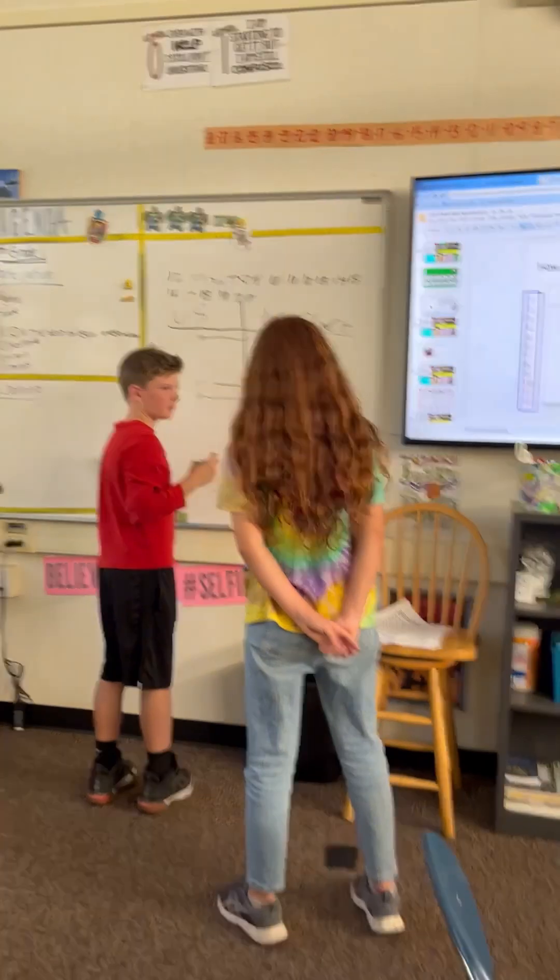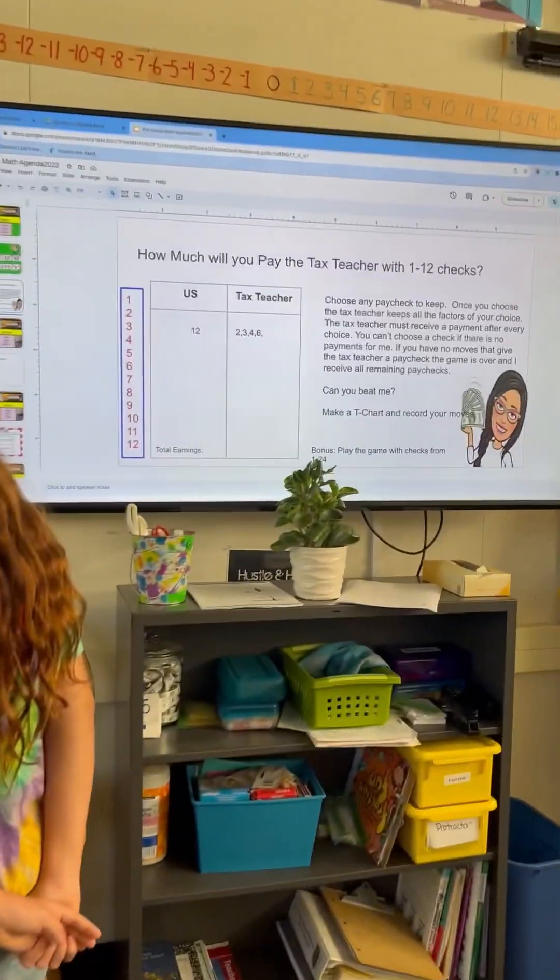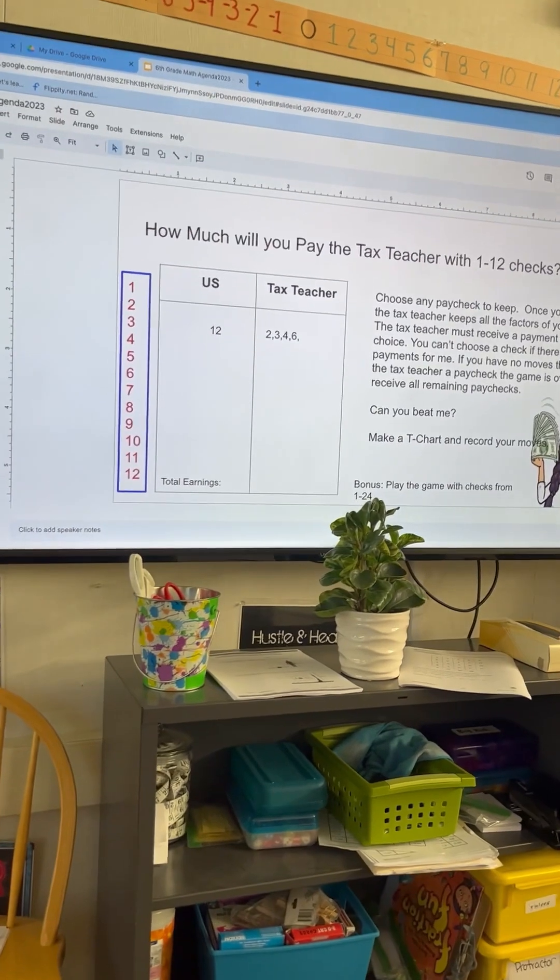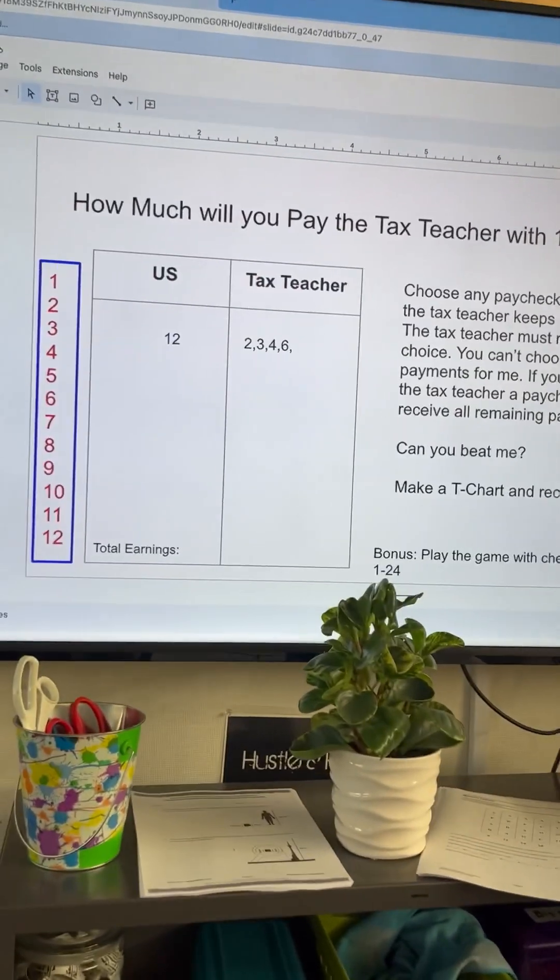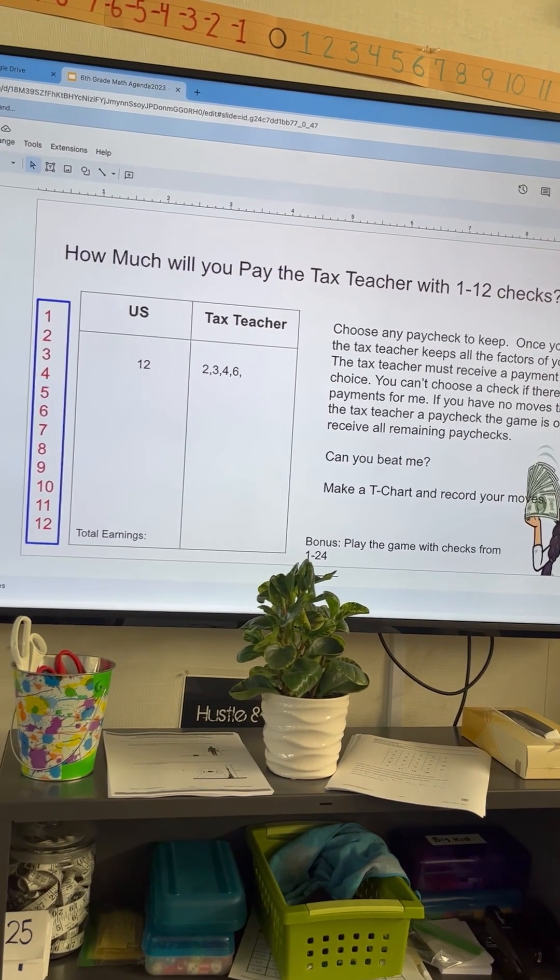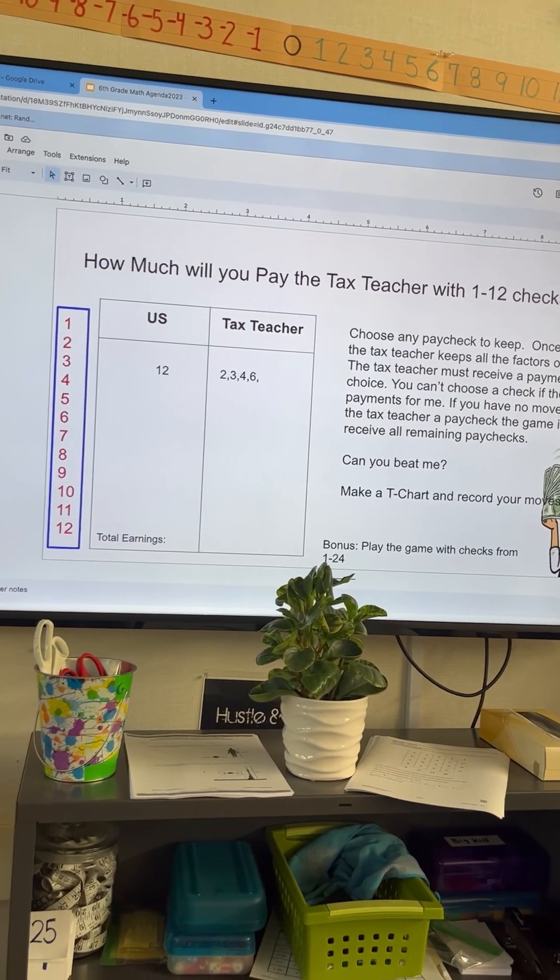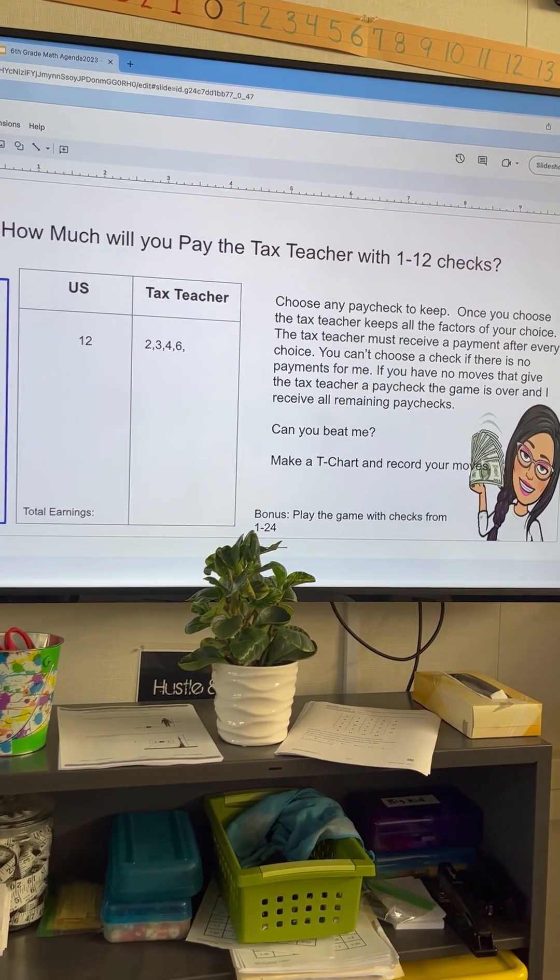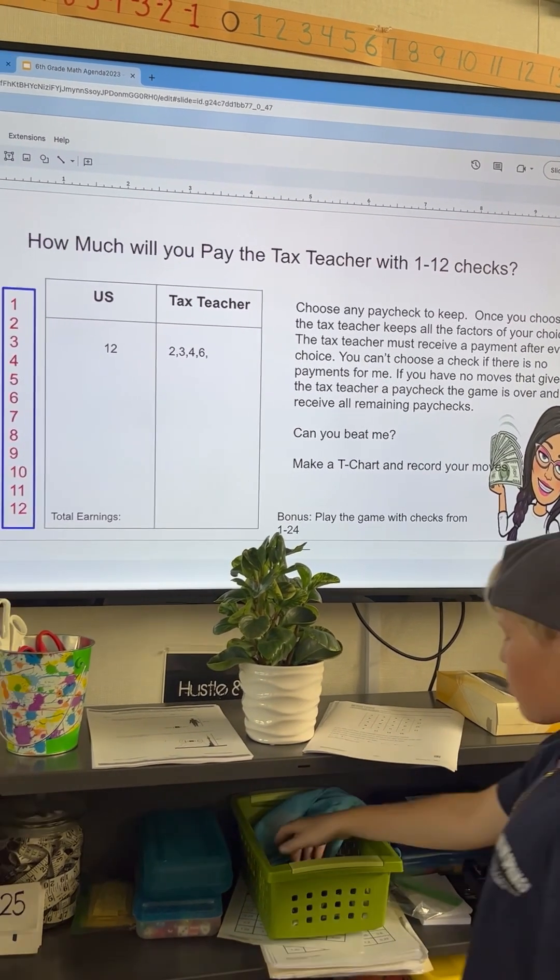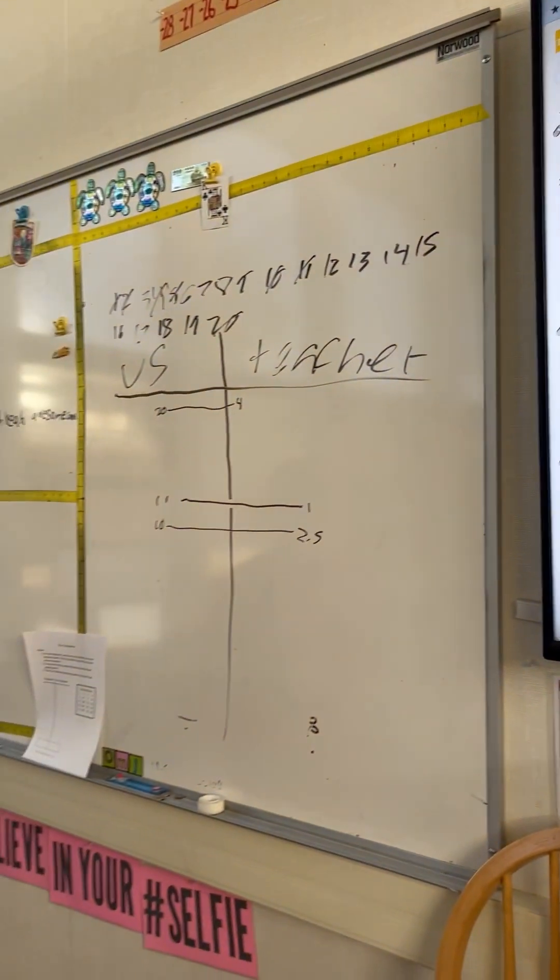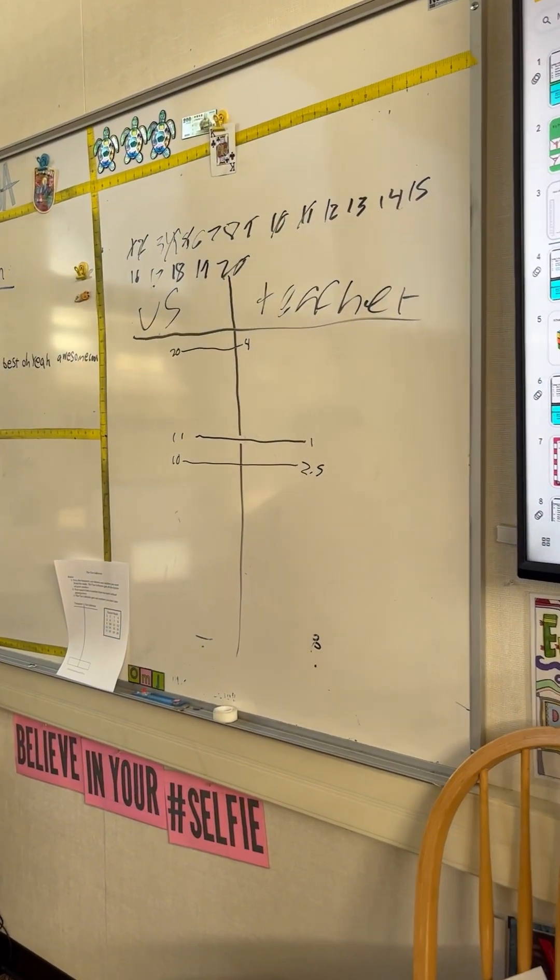This is our math task. Students are working at the board. They're doing the tax collector task, which is basically from building thinking classrooms. Students want to beat the teacher and make the most money. So it's helping them think about factors and prime numbers and how they can decompose a number into its factors, trying to get more money than the teacher.